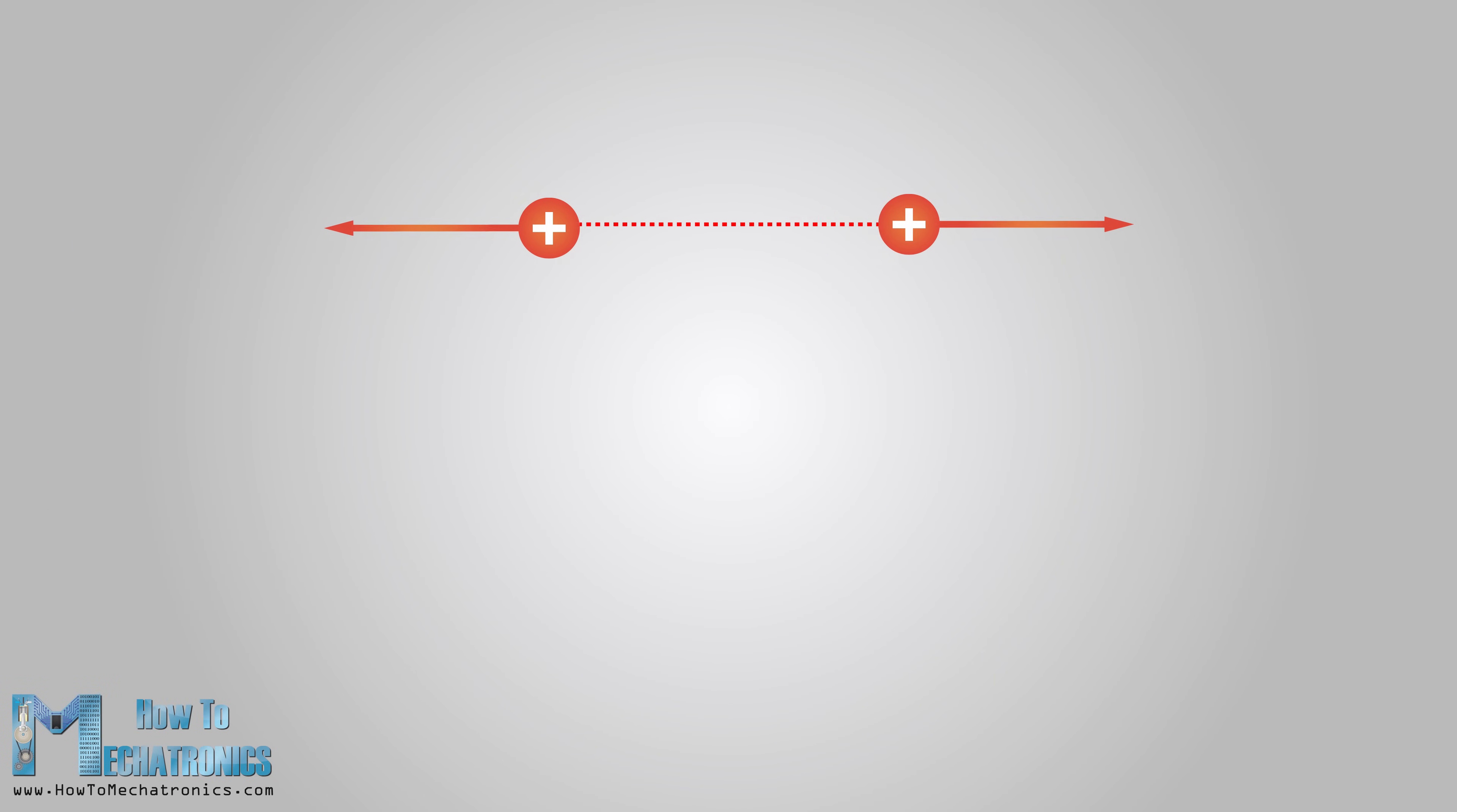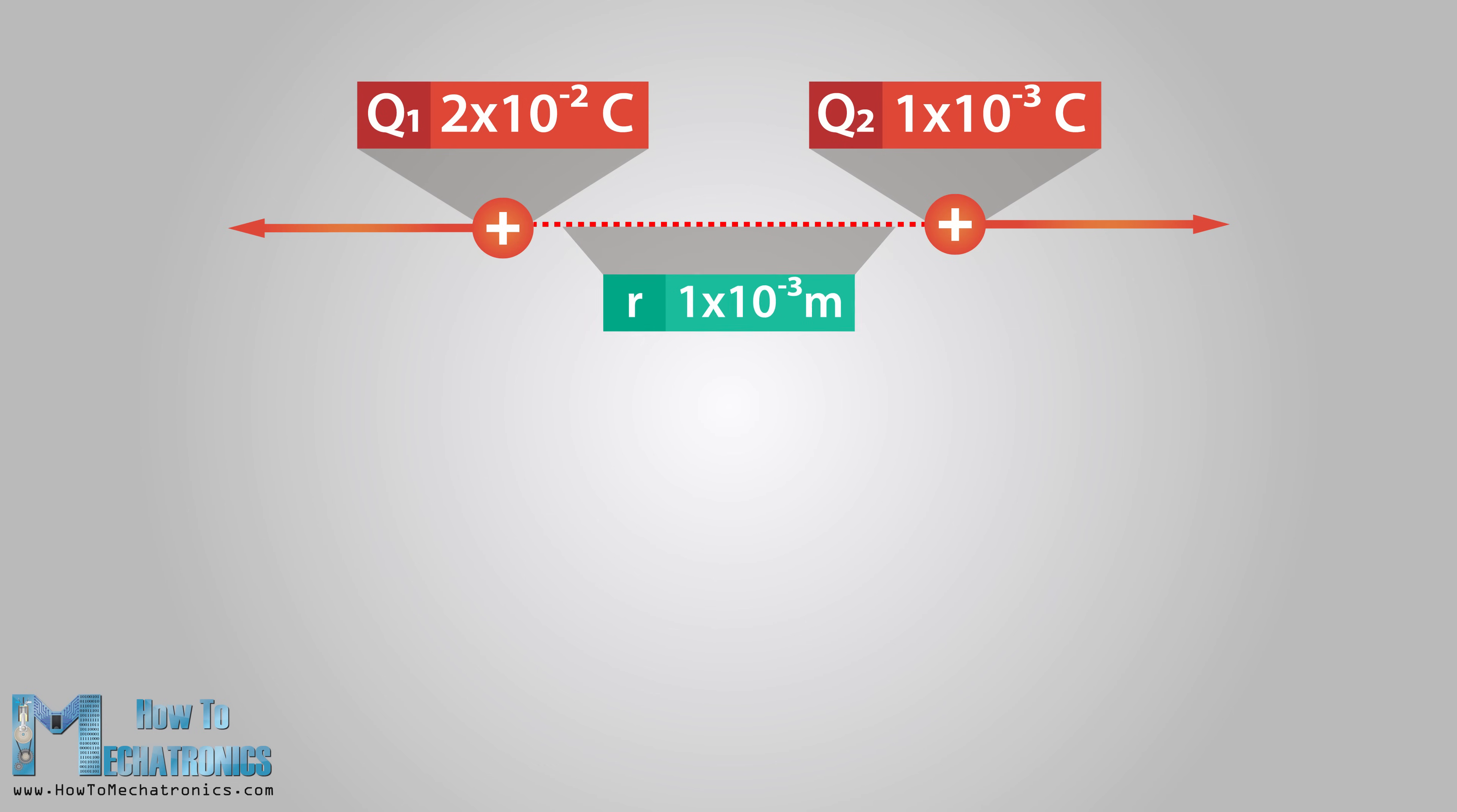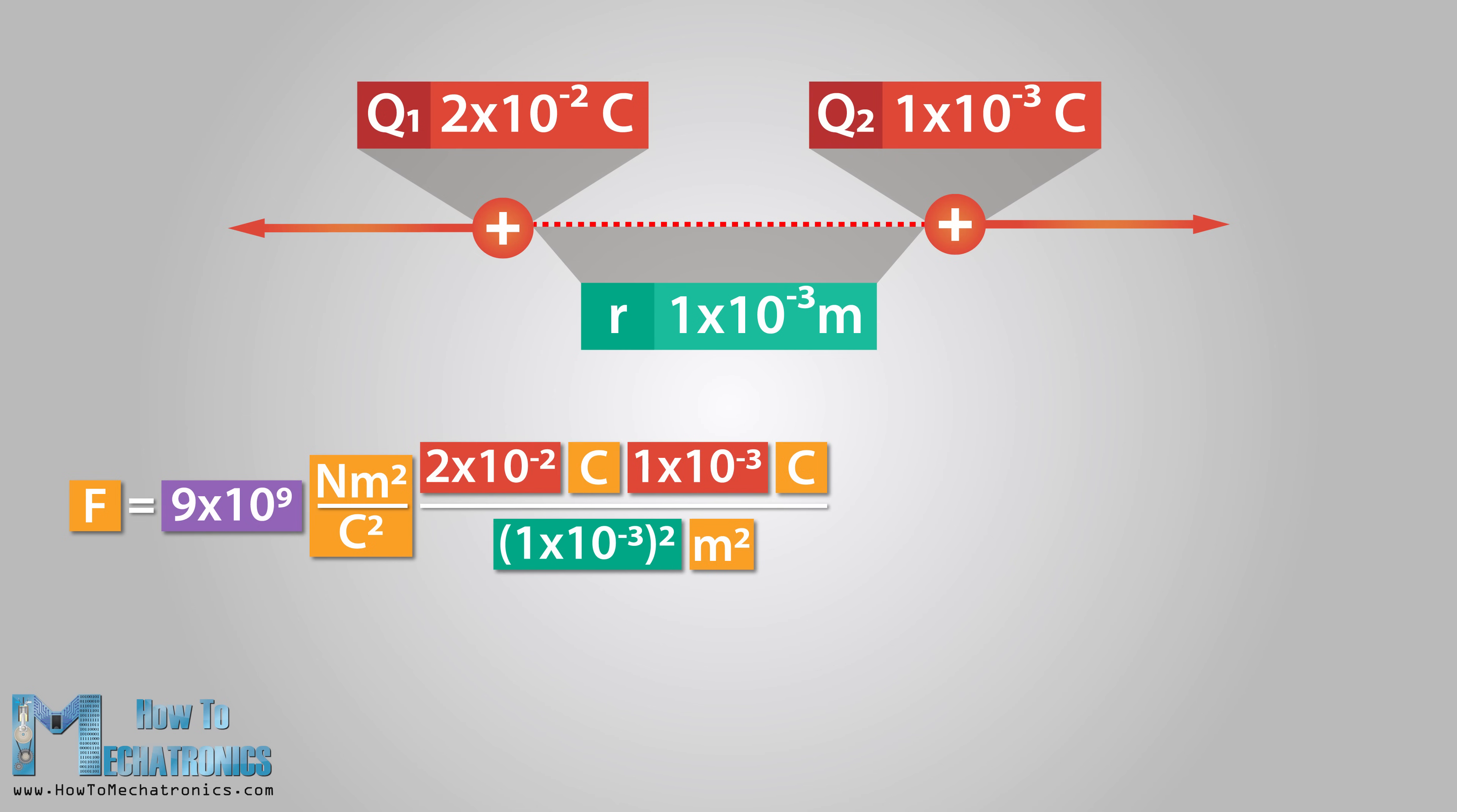Let's say we have two positive charges. The first charge Q1 is 2 times 10 to the minus 2 Coulombs, and the other charge Q2 is 1 times 10 to the minus 3 Coulombs. The distance between them r is 1 mm, which is 1 times 10 to the minus 3 meters. Now we can calculate the force between these charges using the equation. So F is equal to k multiplied by the product of the two charges Q1 and Q2 and divided by r squared. Here we can cancel out meters and Coulombs, which means that we are left with newtons.